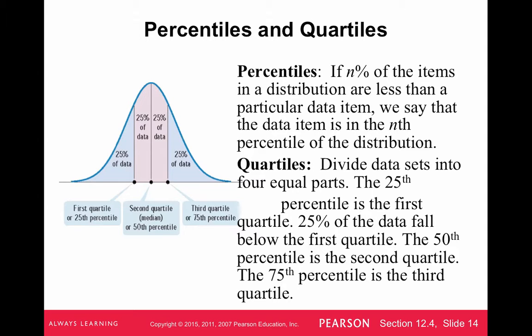Percentiles and quartiles: if you've been to the doctor as a kid, you may have heard that your height or weight is in a certain percentile. If your height is at the 75th percentile, that means 75% of the population is shorter than you. So a percentile gives you the rank — the percentage of people that score below you. Quartiles divide the data into four parts of 25% each. The first quartile is the 25th percentile, the second quartile is the median at the 50th percentile, and the third quartile is the 75th percentile.